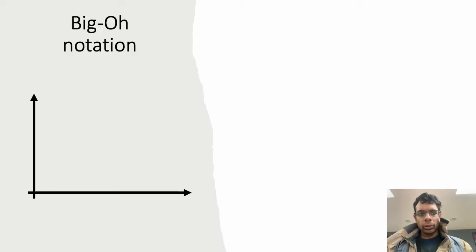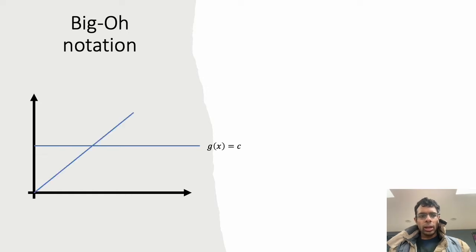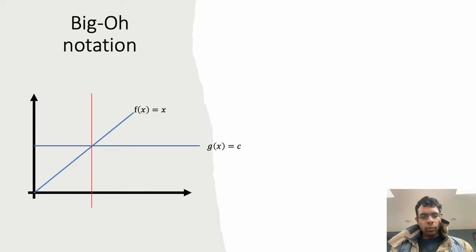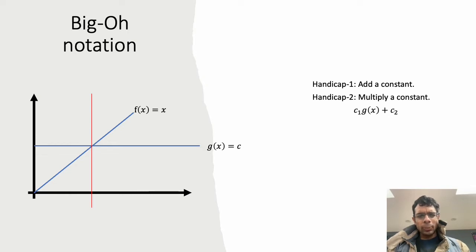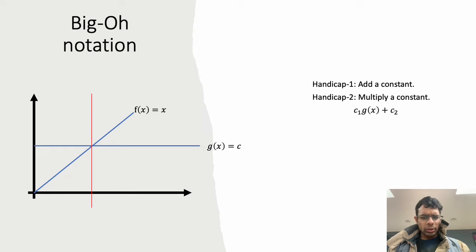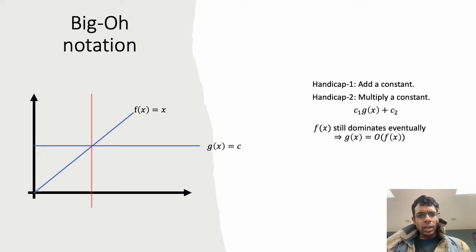A prerequisite for complexity theory is the big O notation, a concept that applies to functions. Take a function g(x) equal to a constant, and another function f(x) equal to x. There's a certain x-naught given by the red line where once you cross x-naught, f(x) is always greater than g(x). So f(x) dominates g(x). Even if we add handicaps — allowing any constant added to or multiplied by g(x), so c1·g(x) + c2 — the conclusion stays the same. Eventually f(x) passes this new function and stays greater. When this happens, we say g(x) is big O of f(x).